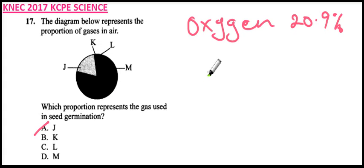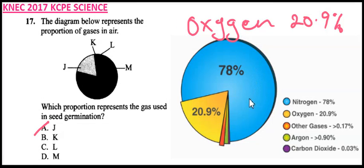We can have a look at another diagram that shows the representation of gases. You can see here we have nitrogen, which is 78%, and oxygen, which is this part here at 20.9%. This part is the one represented by oxygen.